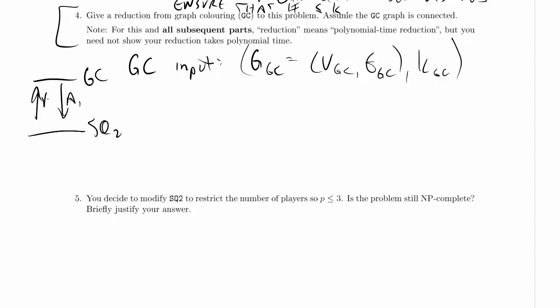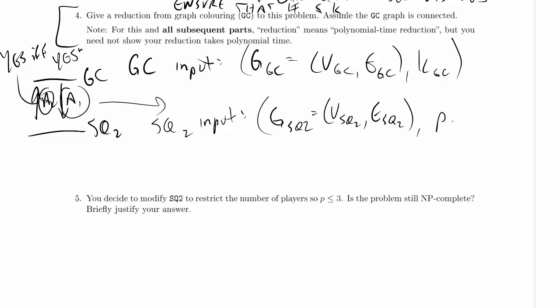So we need algorithm 1, we need algorithm 2. Algorithm 2 is going to be our usual yes, if and only if yes. Okay, good enough. How about algorithm 1? Okay, well the space quest 2 input is a graph, the space quest 2 graph, which is v space quest 2 comma e space quest 2. Okay, and also a p, that's the number of players, and a k, this is the empire size limit. That should be it, that should be all we need.